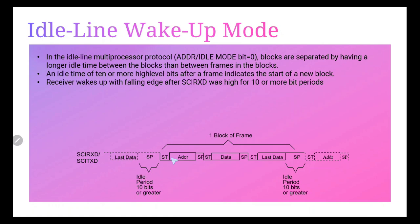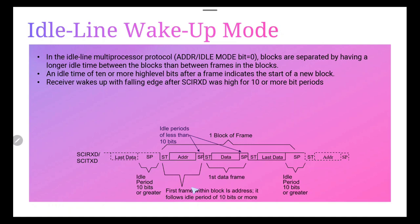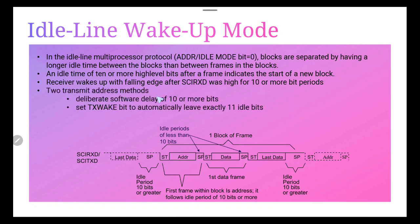Whenever the idle line is more than 10 bits, the next bit will be the starting bit of a new block. If it is less than 10, then one block of frames continues to send data. The first frame within the block follows an idle period of 10 bits, while the idle period within a block will be less than 10 bits. To transmit the address, there are two methods available: either provide a delay of 10 or more bits, or set the TX wake bit to automatically leave exactly 11 bits idle.